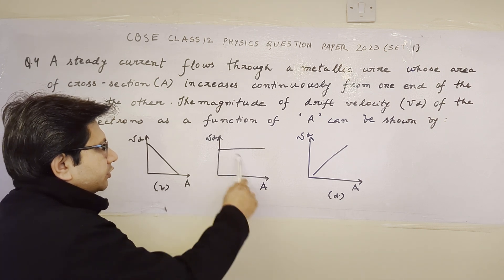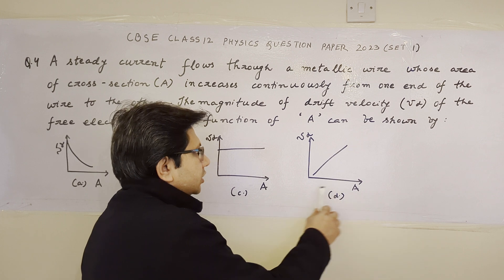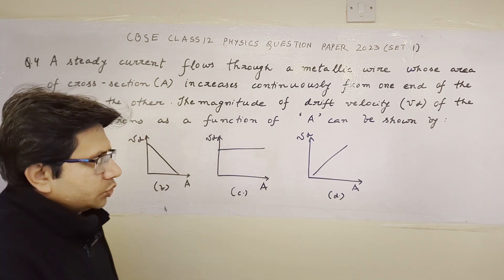And in this particular graph, when the area of cross-section is increasing, the drift velocity is also increasing.